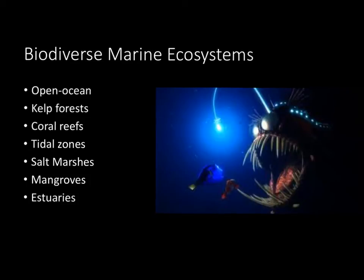The open ocean is more than just the anglerfish, of course. Next, we have kelp forests, which house our favorite keystone species, the sea otter, and much more life. Then we have coral reefs — beautiful ecosystems of biodiversity, though human activity is putting them in jeopardy. Then we have tidal zones, think tide pools, salt marshes, mangroves, and estuaries. An estuary, just to clarify, is where saltwater and freshwater meet.